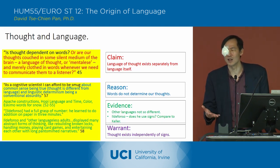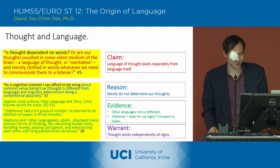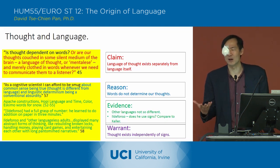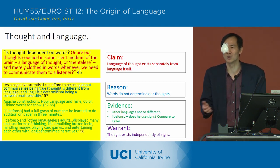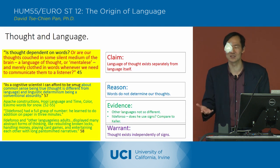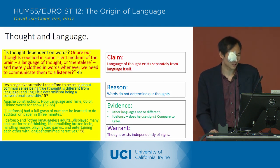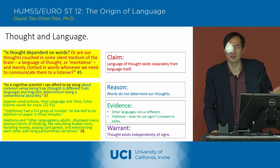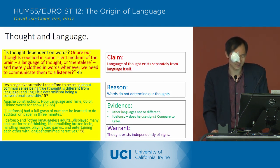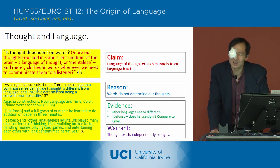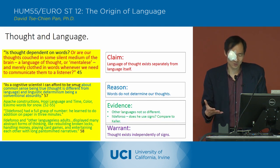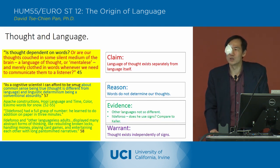Looking at the Eskimo language more closely, it seems like there are maybe two words for snow. And in English we've got several words for snow as well — snow, blizzard, sleet, slush — all different ways of expressing the concept of snow. So he's saying different languages are not so different, and in fact different languages don't really determine the way people think.